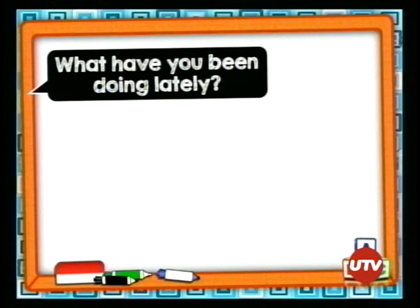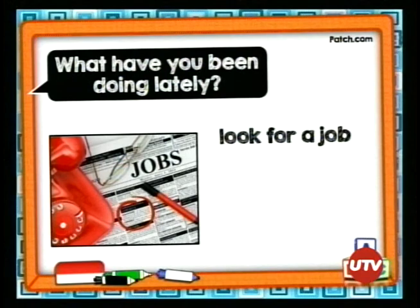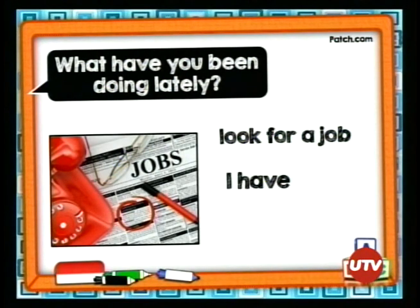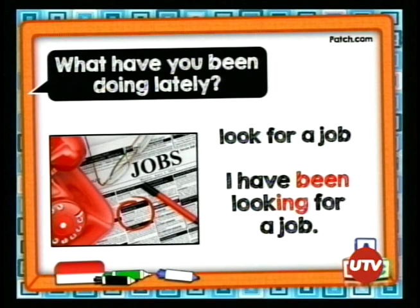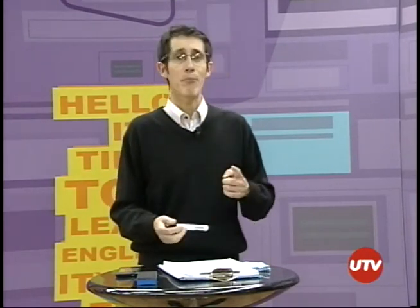Vamos con el último ejemplo. What have you been doing lately? El verbo es: look for a job — buscar trabajo. ¿Cómo digo «he estado buscando trabajo»? I have been looking for a job — he estado buscando un empleo, un trabajo. I've been looking for a job. What have you been doing lately? I've been looking for a job.